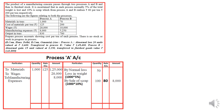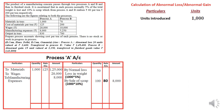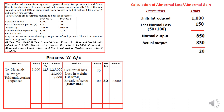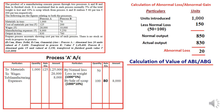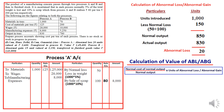Now we calculate abnormal loss or abnormal gain. Units introduced: 1000 minus normal loss 150 (50 + 100) = normal output 850. Deduct actual output given in the question — the resultant figure is positive, therefore it is abnormal loss. Once we have abnormal loss in units, we calculate its value. Formula: Normal cost of normal output ÷ Normal output × ABL. Normal output is 850; abnormal loss is 20 units.